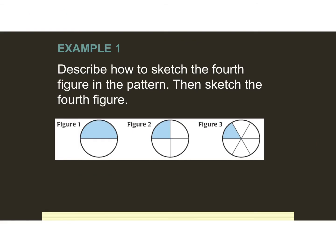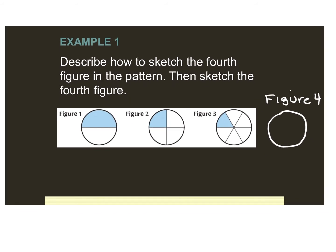Our first example says: describe how to sketch the fourth figure in the pattern, then sketch the fourth figure. Figure number 4 is going to have 8 sections. Number 1 has 2, number 2 has 4, number 3 has 6, so next we should have 8. You can think of it as taking the figure number and multiplying it by 2 — figure 1 times 2, figure 2 times 2 gives 4 sections, figure 3 times 2 gives 6. So figure 4 times 2 gives 8 sections.